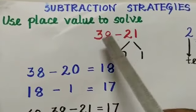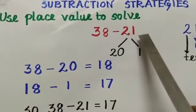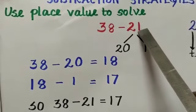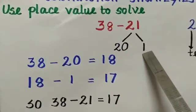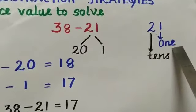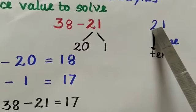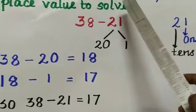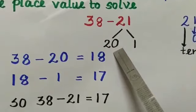The question is 38 minus 21. In the breakup method we will break up the subtraction into tens and ones. In 21 we have two tens and one one. So two tens is nothing but 20.